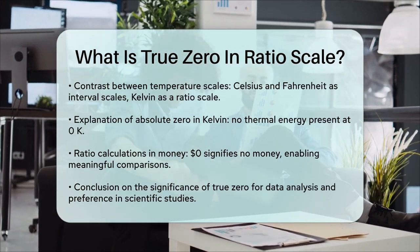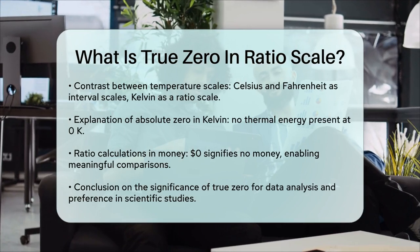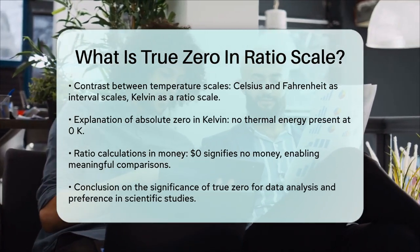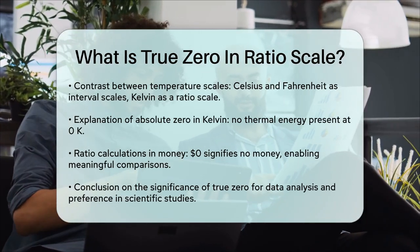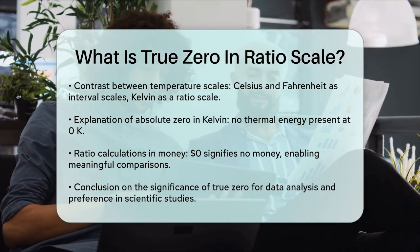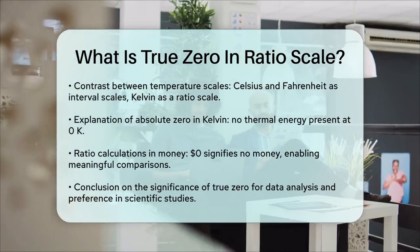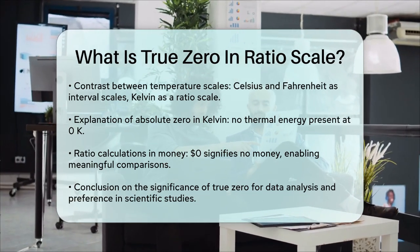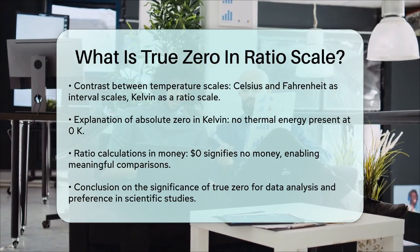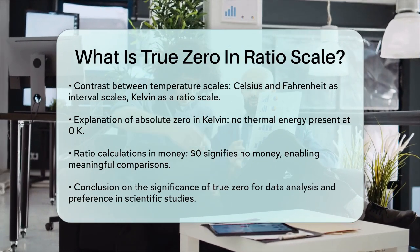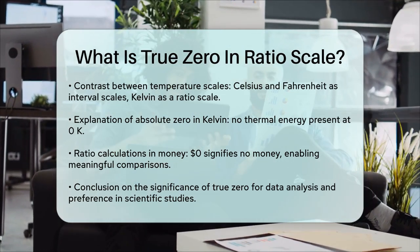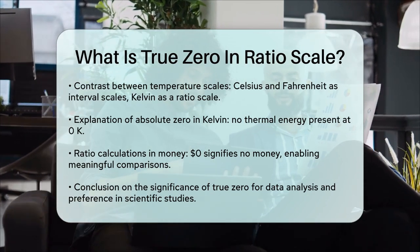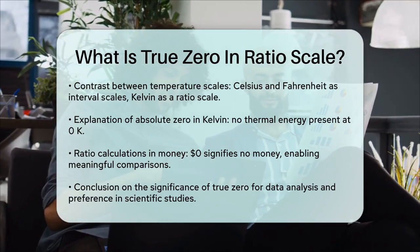In summary, the true zero in a ratio scale is what makes it so powerful for data analysis. It provides a real starting point from which all other measurements are made, allowing for precise and meaningful calculations. This is why ratio scales are often preferred in scientific and statistical analyses, because they offer the most precise and versatile form of measurement.